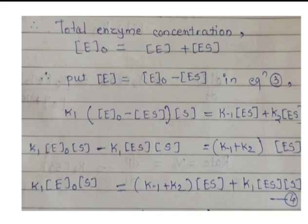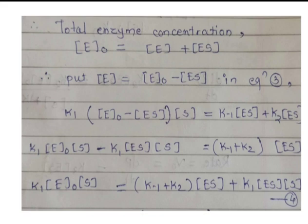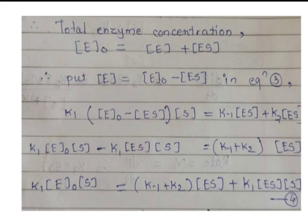Substituting, equation 3 becomes: K1([E]₀ - [ES])[S] = K-1[ES] + K2[ES]. Multiplying K1 inside the bracket: K1[E]₀[S] minus K1[ES][S] = (K-1 + K2)[ES]. We then transfer the term containing [ES] from the left side to the right side.